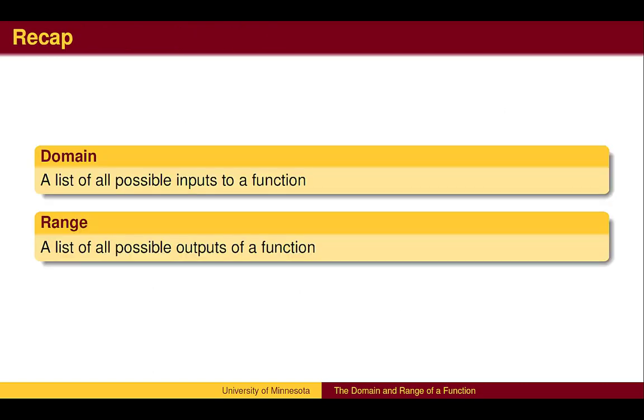To recap, there are functions for which we must be careful about which numbers we use as inputs, the most common of which are the square root function and fractions. The list of all possible inputs to a function is called the domain. The list of all possible outputs is called the range of the function.